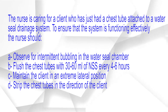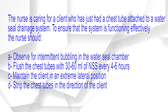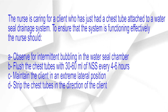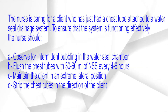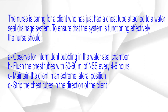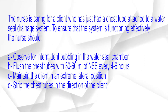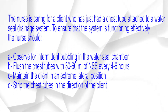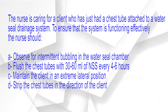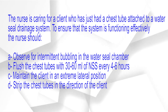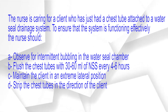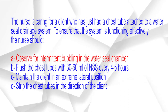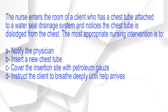The nurse is caring for a client who has just had a chest tube attached to a water seal drainage system. To ensure that the system is functioning effectively, the nurse should: A. Observe for intermittent bubbling in the water seal chamber. B. Flush the chest tubes with 30 to 60 ml of NSS every 4 to 6 hours. C. Maintain the client in an extreme lateral position. D. Strip the chest tubes in the direction of the client. The correct answer is option A.